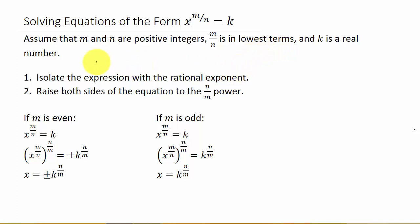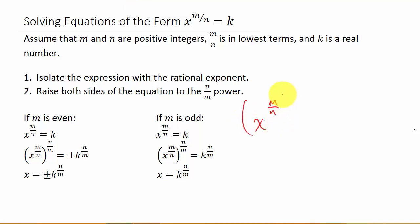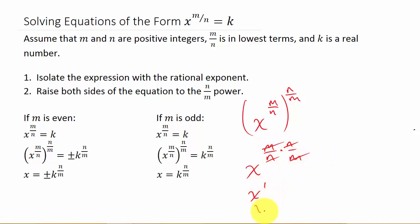The first thing you want to do is isolate the expression that has the rational exponent — get x raised to the power by itself on one side and everything else on the other side of the equal sign. Then we raise both sides of the equation to the n over m power. If you have x to the m over n, raising both sides to n over m means you multiply the exponents, they cancel out, and you have just x.